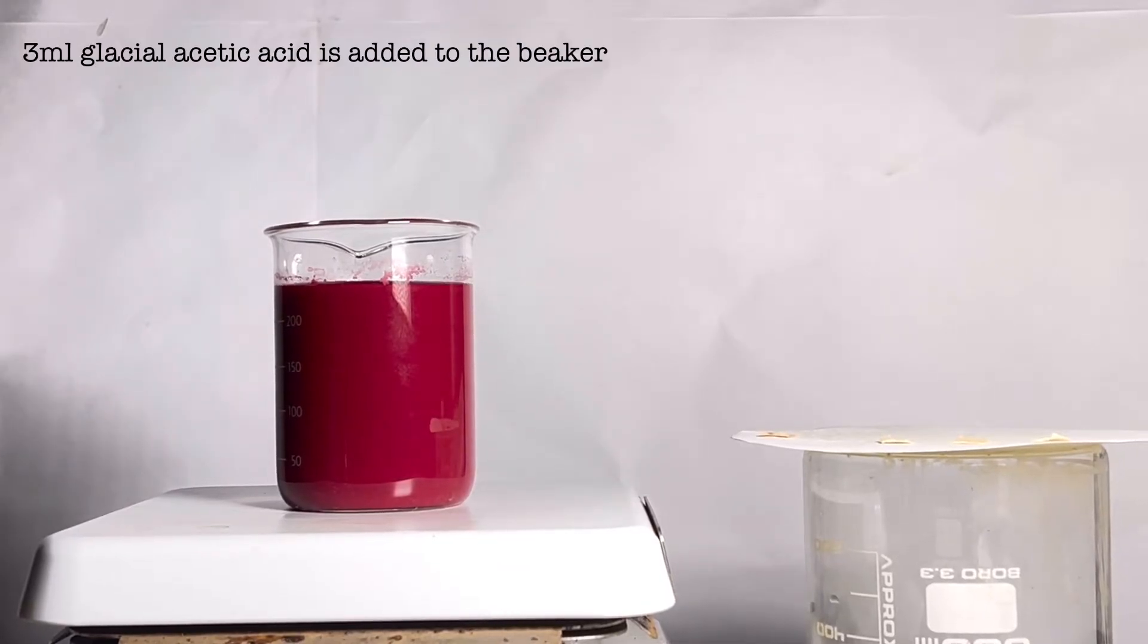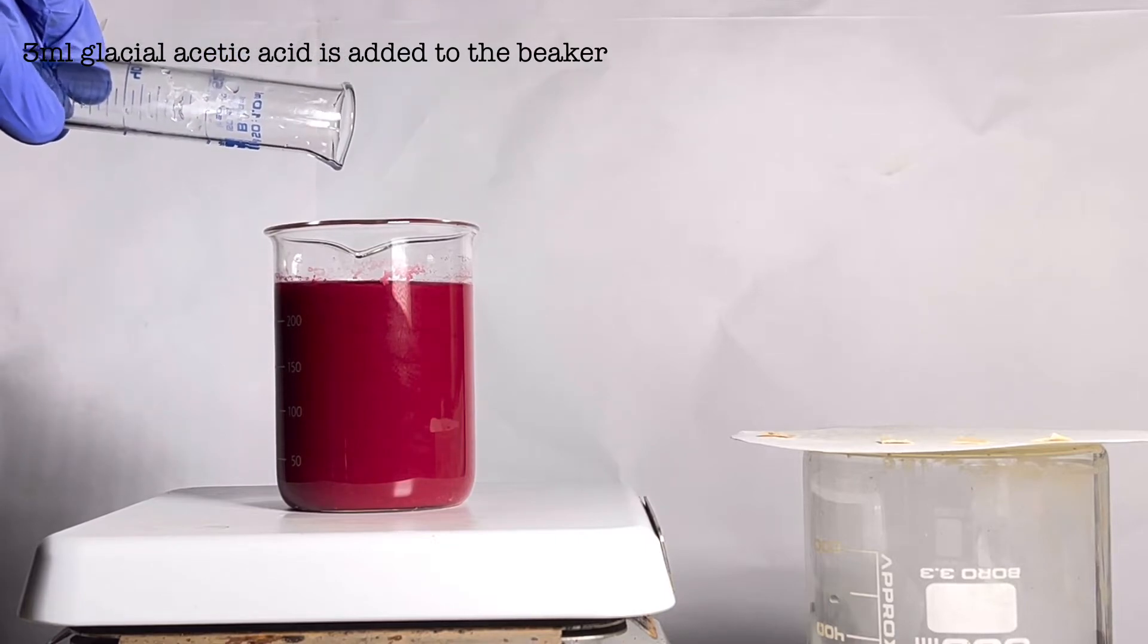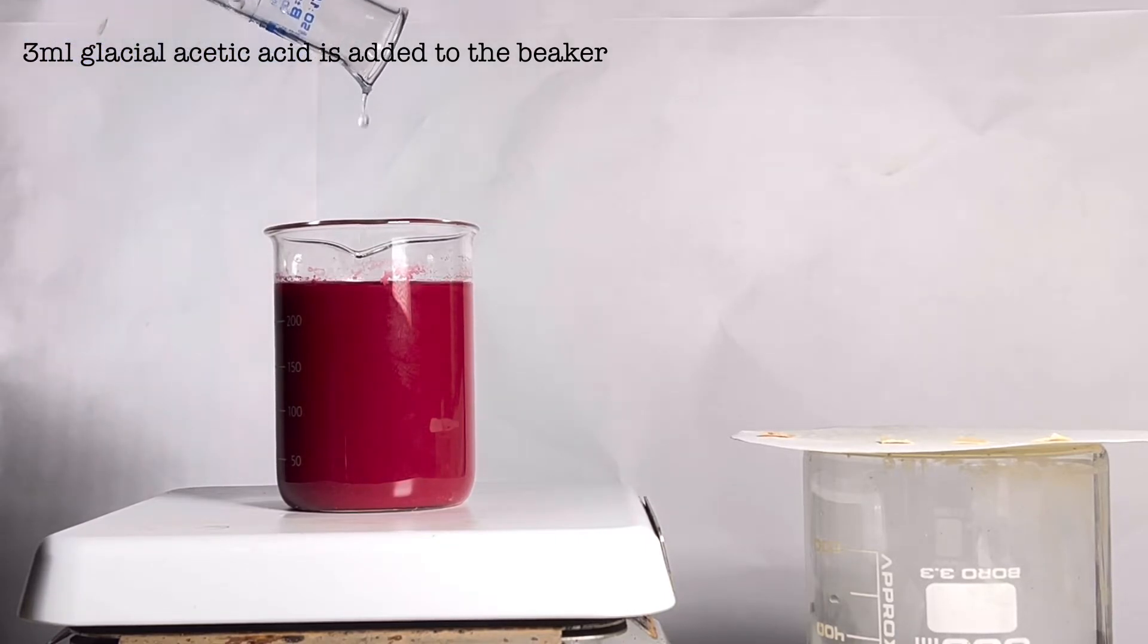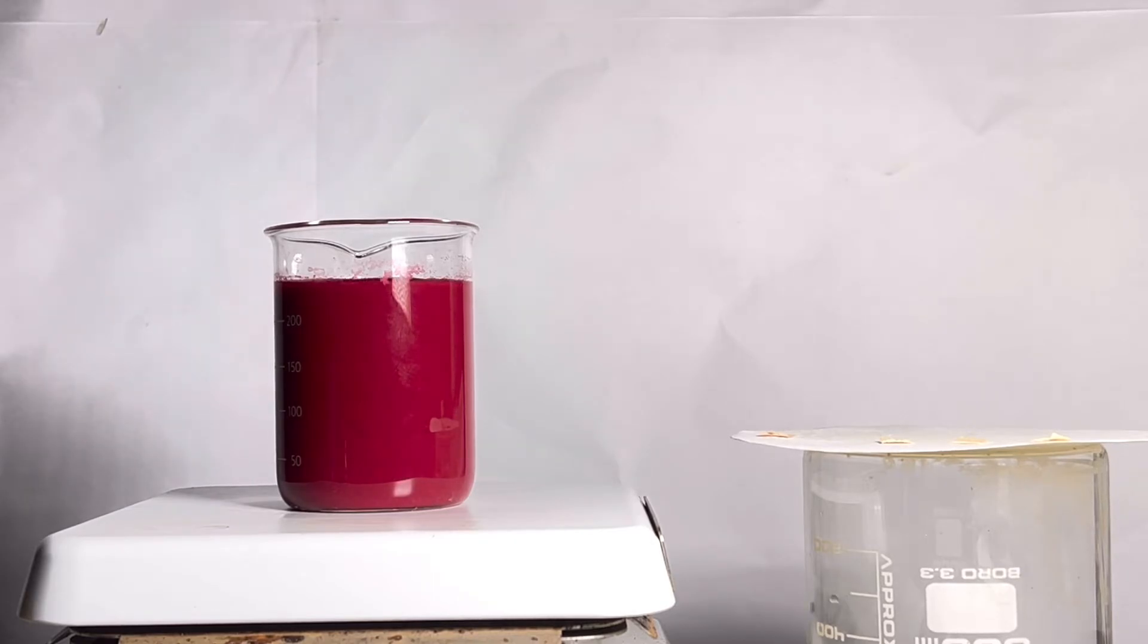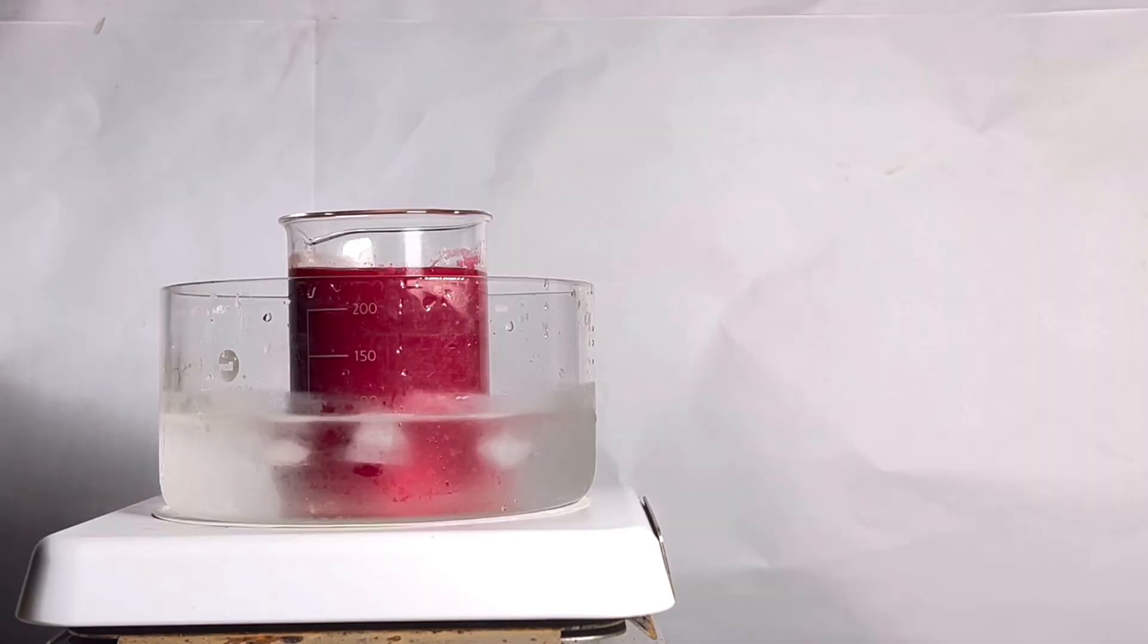Around 3 ml of glacial acetic acid was also added to adjust the pH so that maximum crystallization takes place. Sodium acetate acts as the buffer. Now the beaker is immersed in an ice bath for one hour.